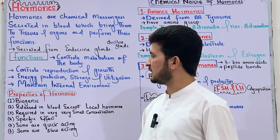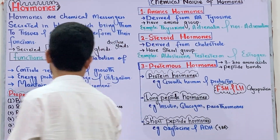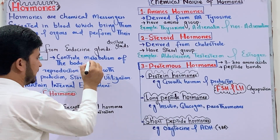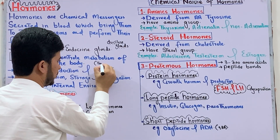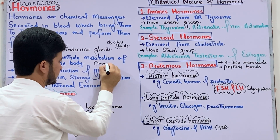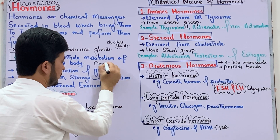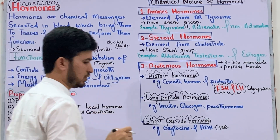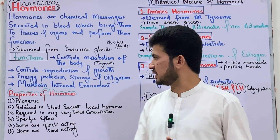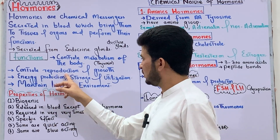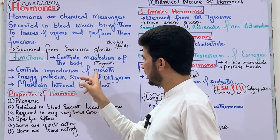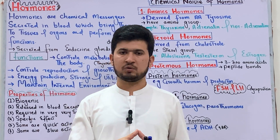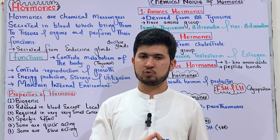For example, thyroxine is a hormone that controls metabolism. The second function is to control reproduction and growth. In humans, both reproduction and growth are controlled by hormones.